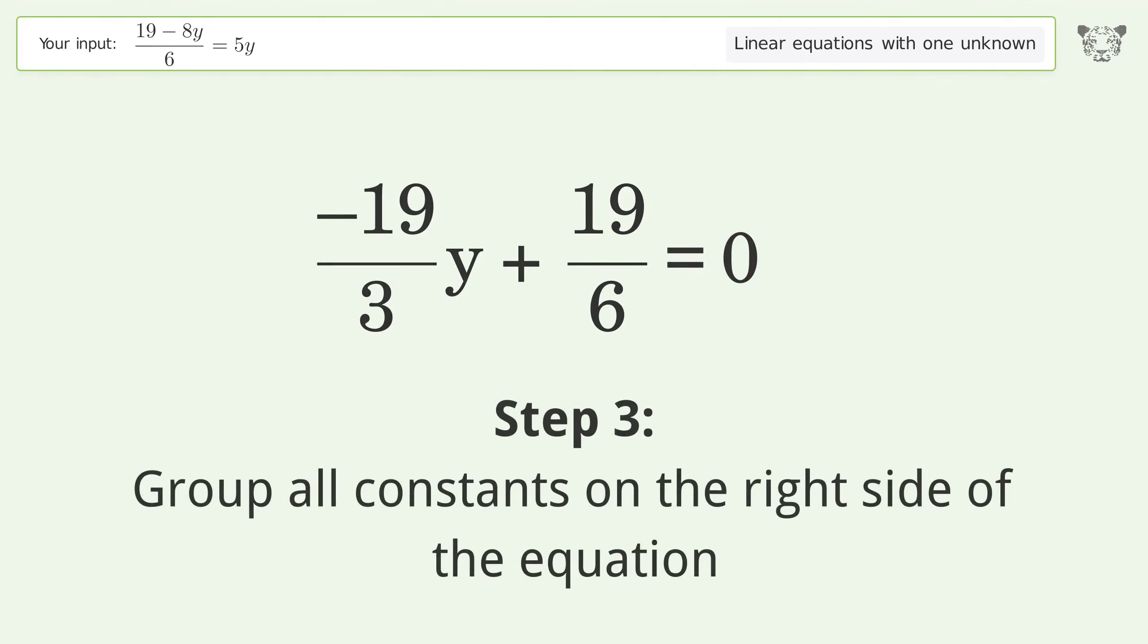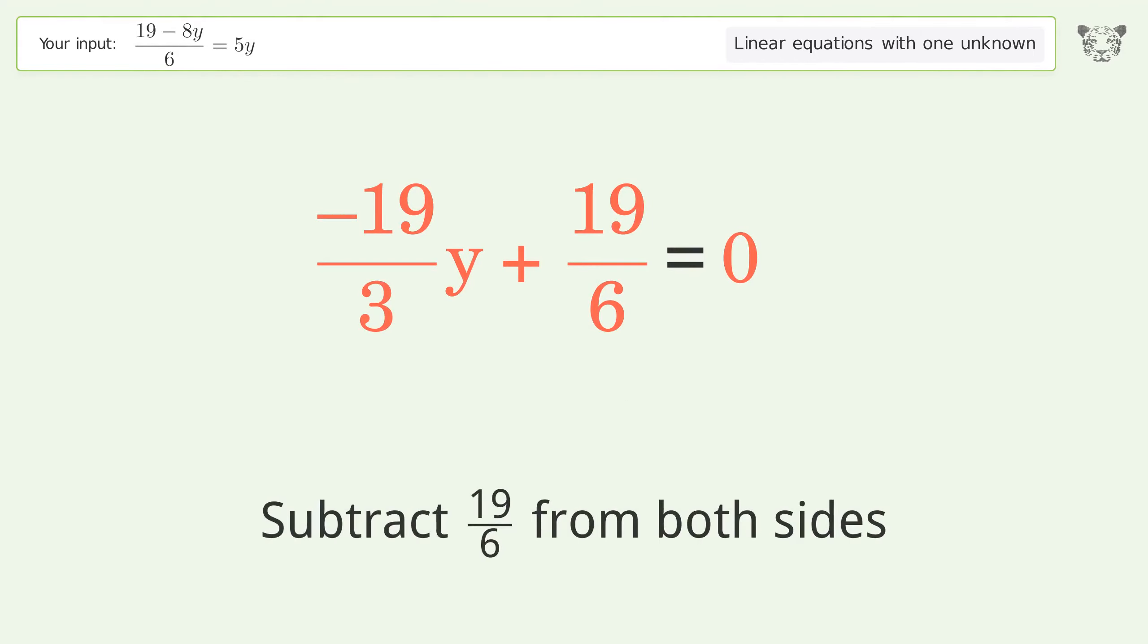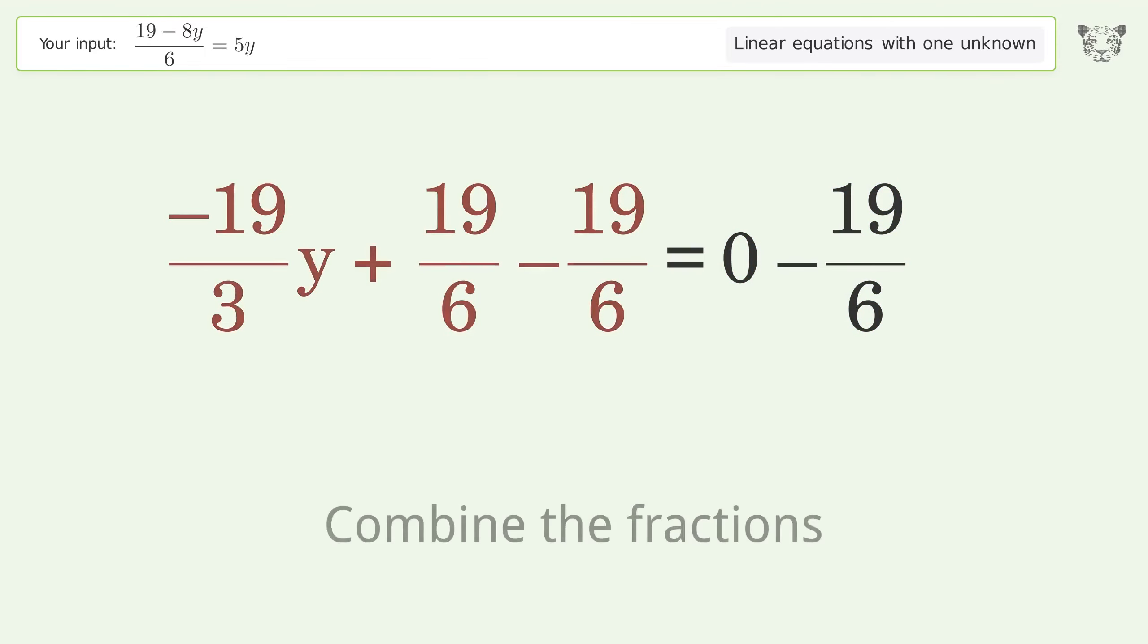Group all constants on the right side of the equation. Subtract 19 over 6 from both sides. Combine the fractions.